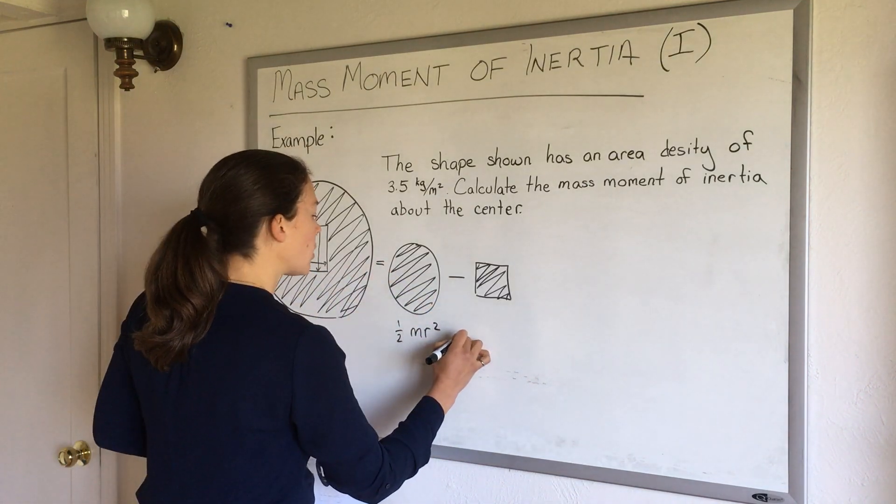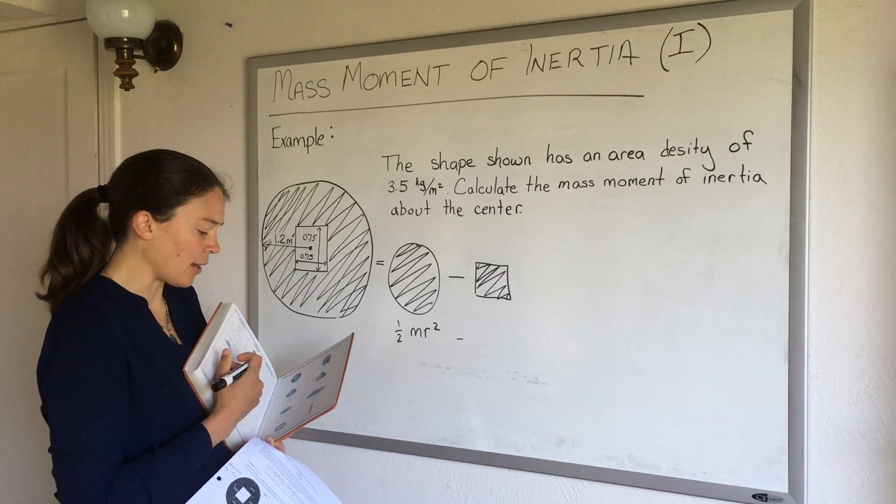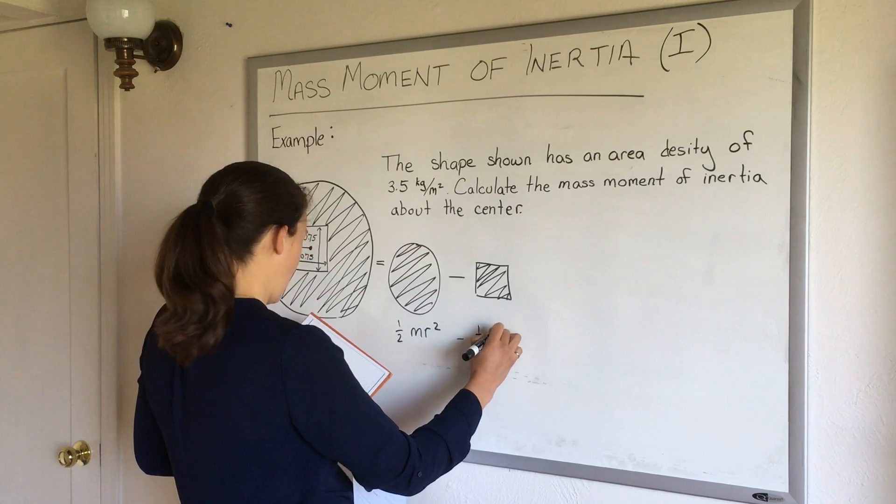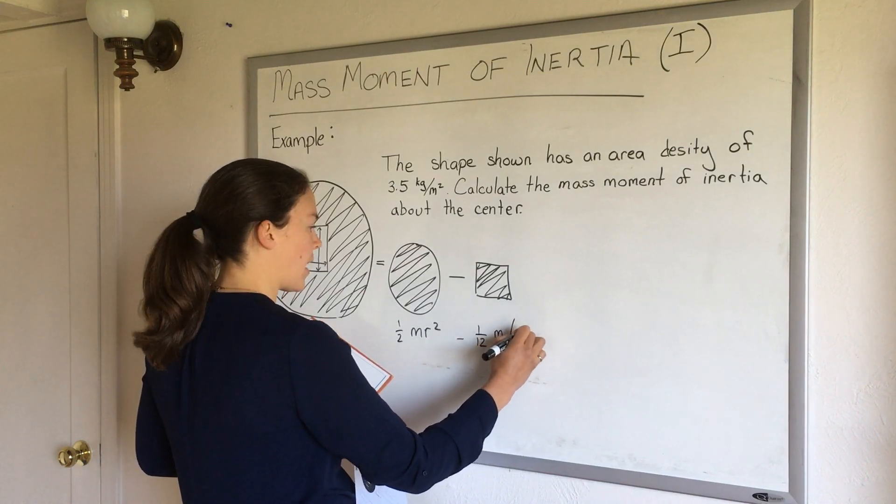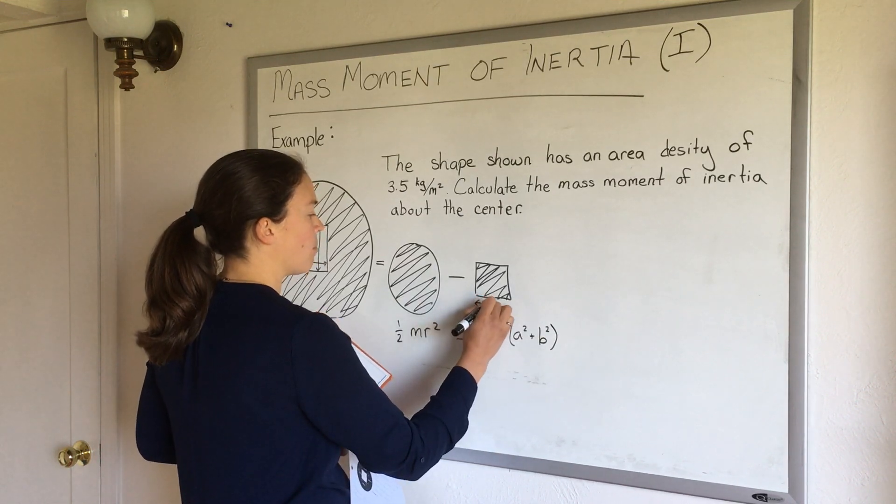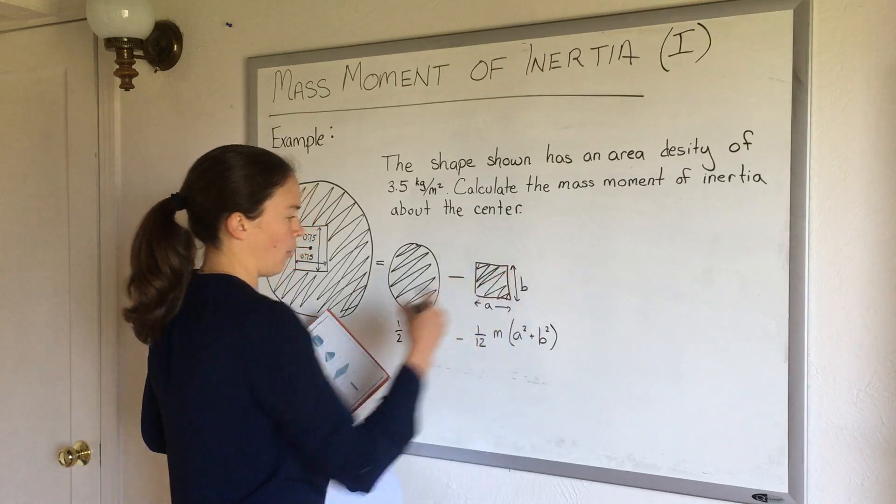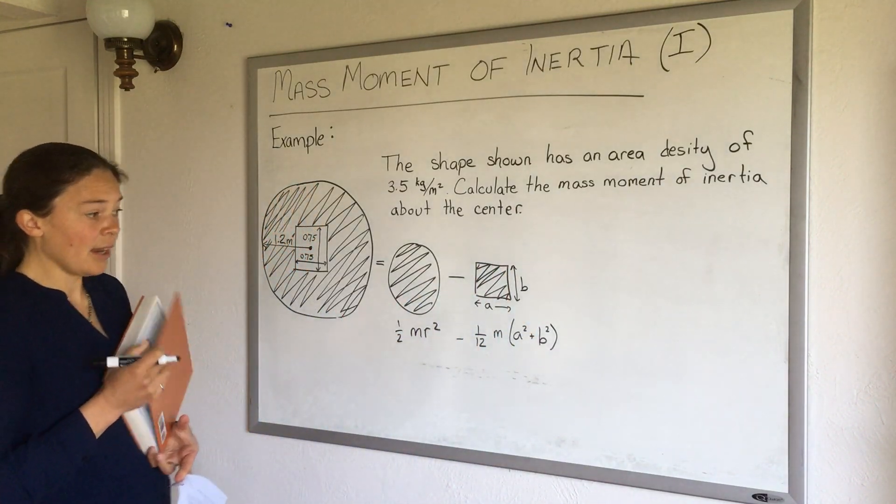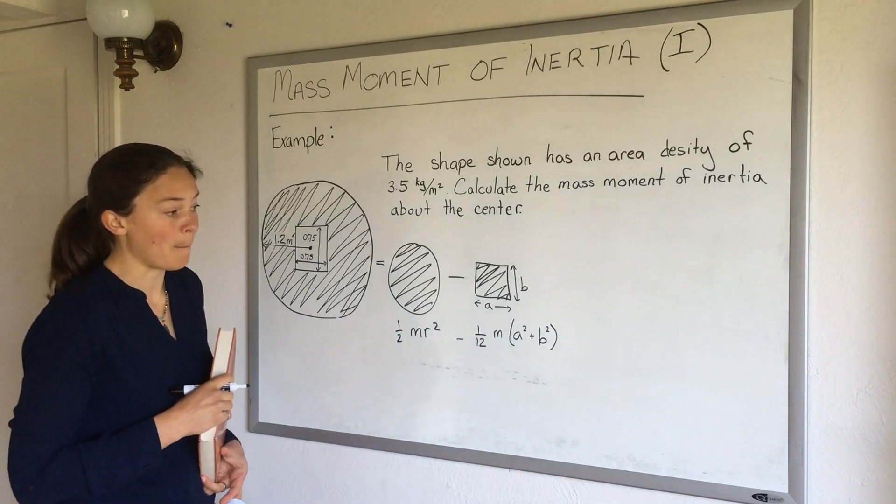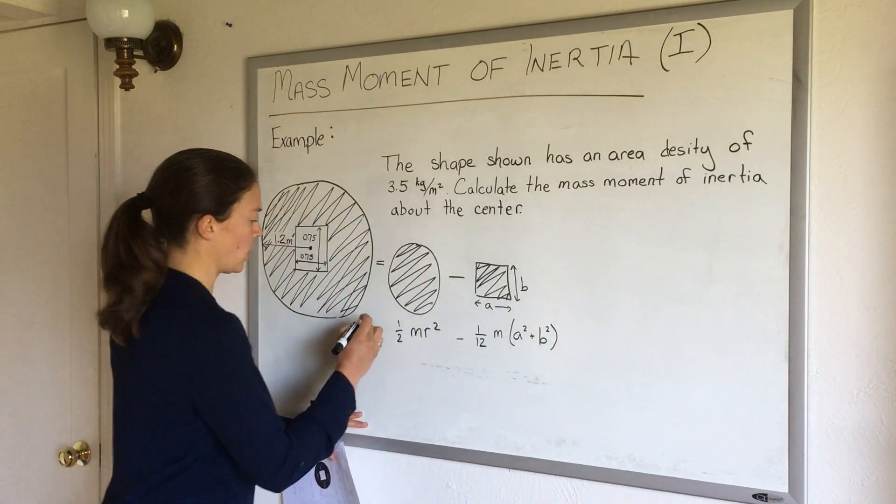And then for this square shape, in fact I have a thin plane here, it's a rectangular shape and it's 1/12 m and they say a squared plus b squared where the a and the b are the two lengths of the rectangle. And so I think I know all of that information we'll have to do a little bit of math to figure out the masses, but I think we should be able to calculate the mass moment of inertia here. So let's do it.